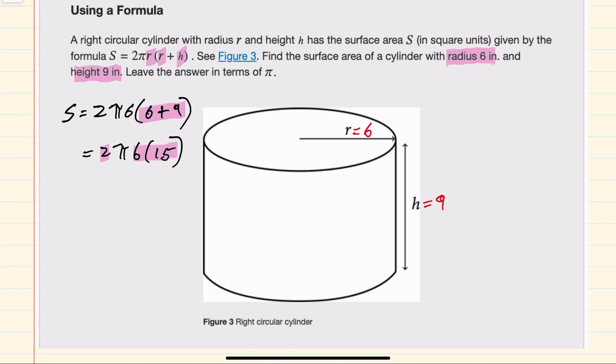2 times 6 is 12, times 15 is 180, and the π is still there. Our units here were inches times inches,